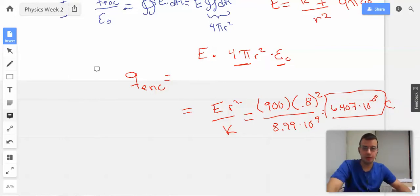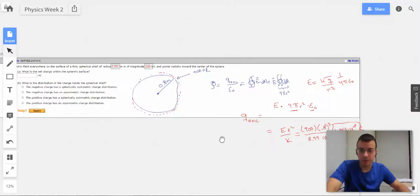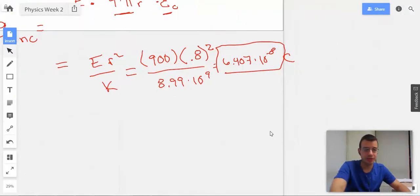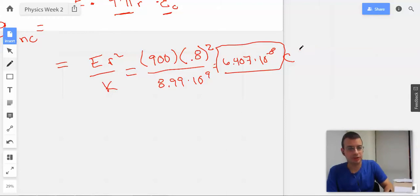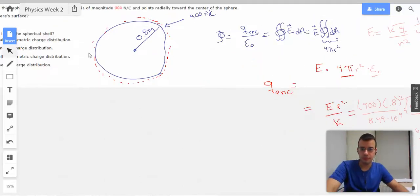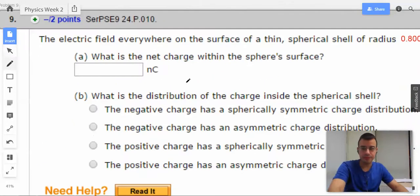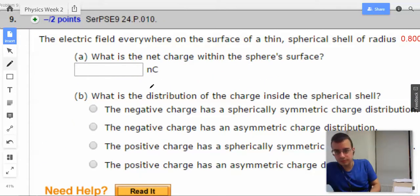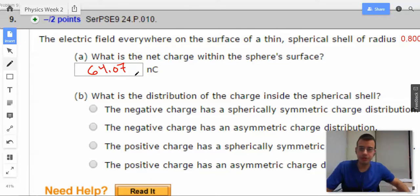6.407 times 10 to the negative 8th coulombs. I wonder if they want it in nanocoulombs. I hope they do want it in nanocoulombs. So, I'll multiply this by 10 to the 9th. So, 10 to the 9th nanocoulombs per one coulomb. Cancel, cancel, cancel, cancel. We get 64.07 nanocoulombs.